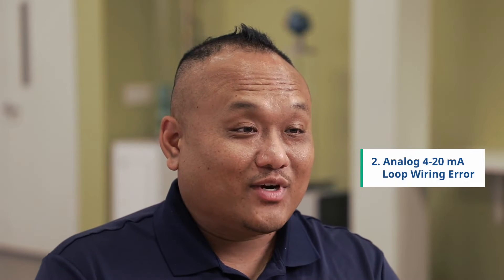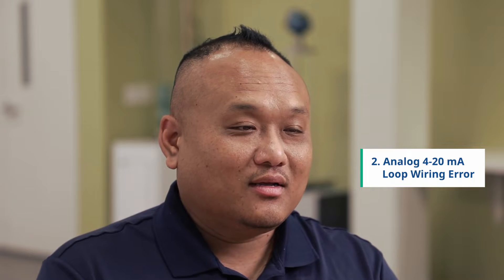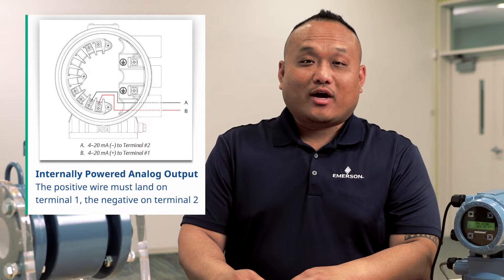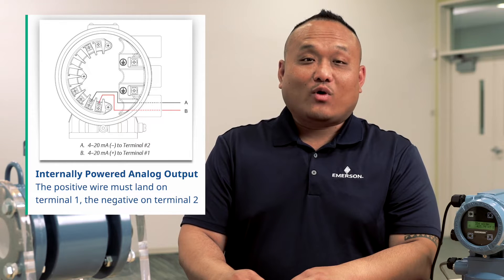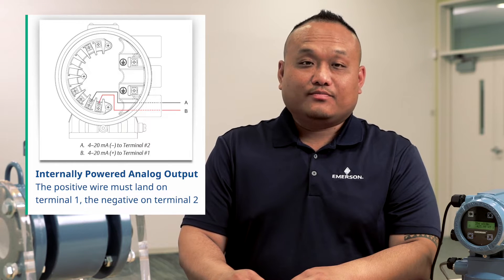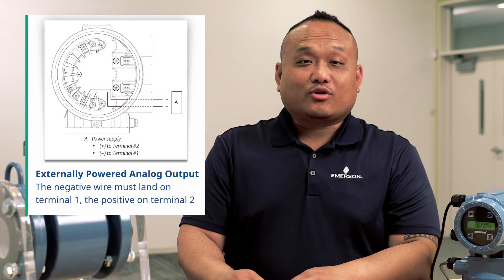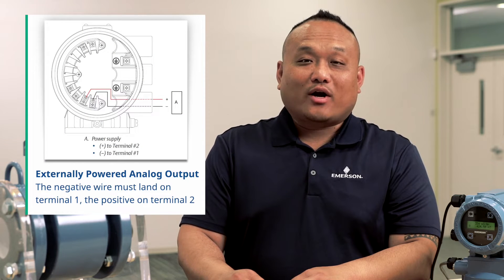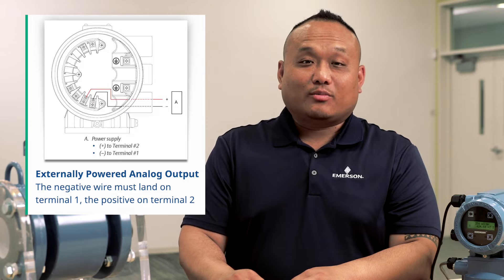Second, verify the analog 4 to 20 milliamp loop wiring. If the transmitter is supplying loop power, the positive wire must land on terminal 1 while the negative wire lands on terminal 2. If there is an external power supply powering the analog output, the negative wire must land on terminal 2.